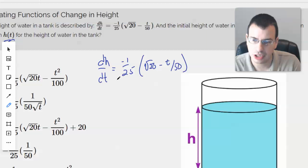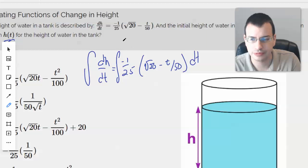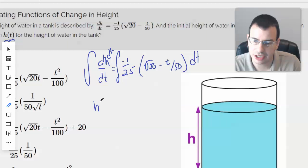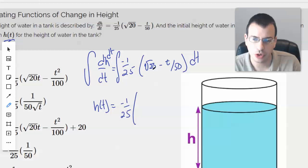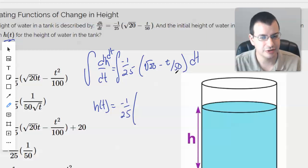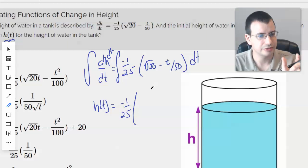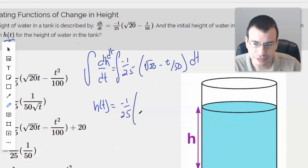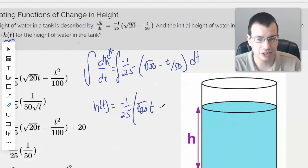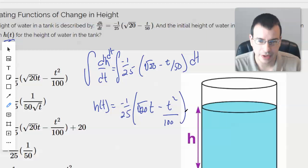Okay, so then integrate both sides with respect to T. And we get H(t) equals negative 1 over 25, since it's a constant. Then we can integrate the square root of 20 and the negative t over 50 separate, since they are separated by a negative minus. So integral of square root of 20 will basically be square root of 20T minus T squared over 2. But I'll multiply that by 50 and get 100, and then we're going to have a plus C.